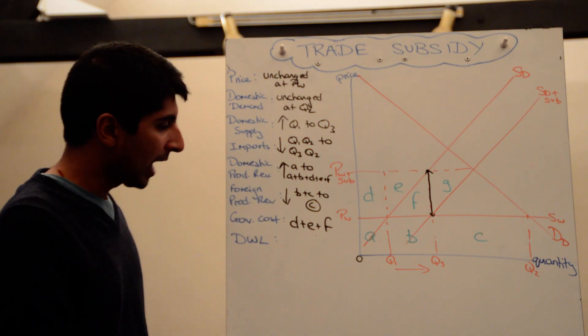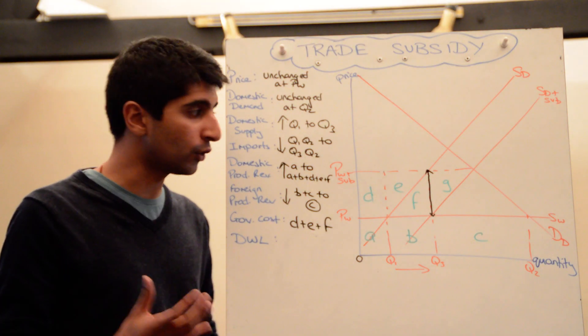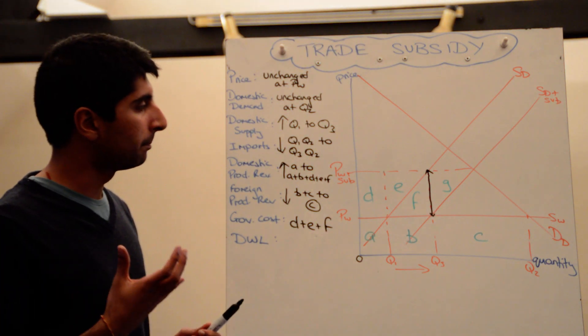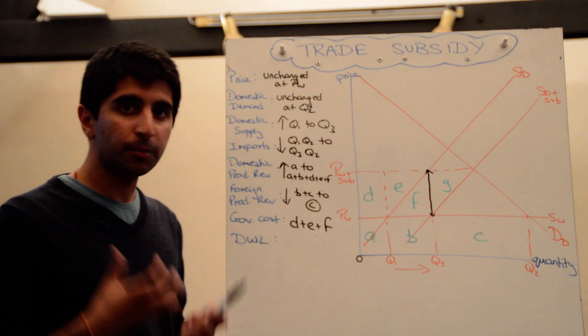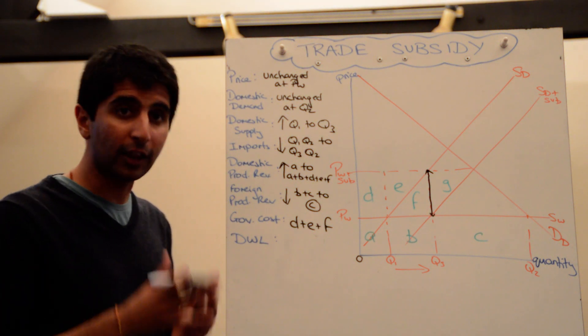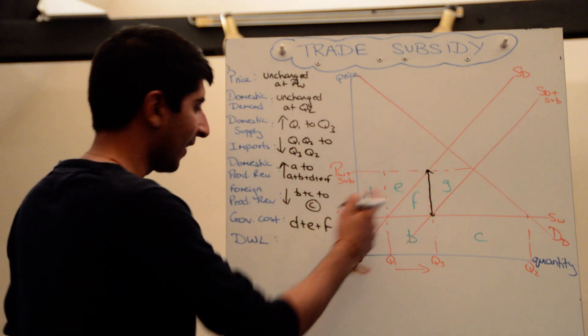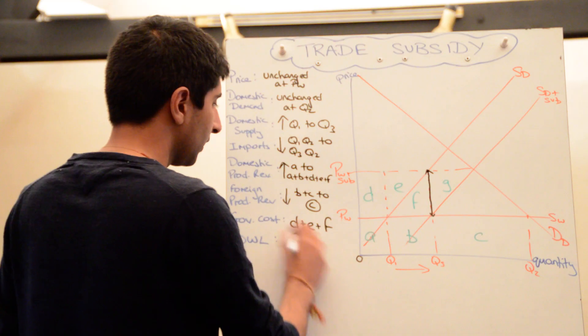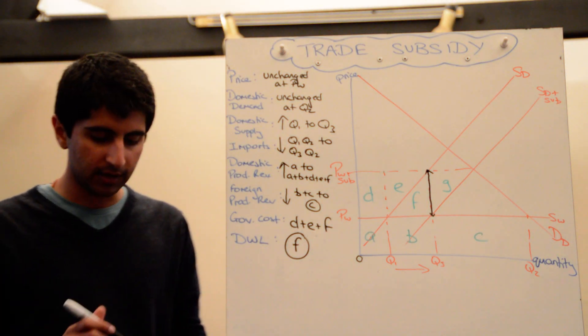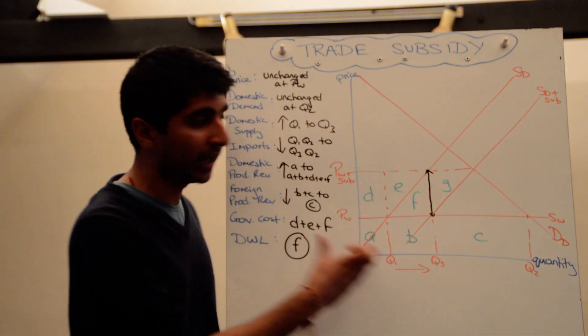What about the deadweight welfare losses? Well, we said there is no deadweight loss of consumer surplus. Why is there no loss? Because there is no change in the price, hence there is no loss of consumer surplus like there normally is. But there is a deadweight welfare loss in terms of world efficiency, and that is f. So f represents the deadweight welfare loss in terms of inefficiency - domestic producers producing extra units when they're not efficient at producing and therefore shouldn't be producing it.